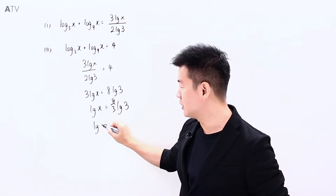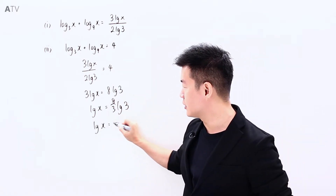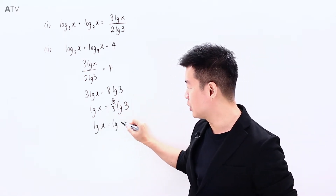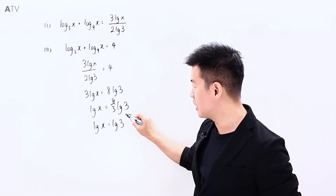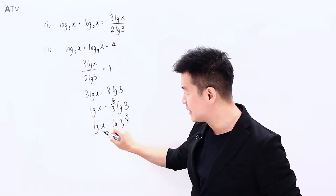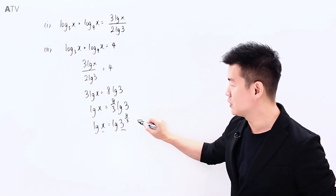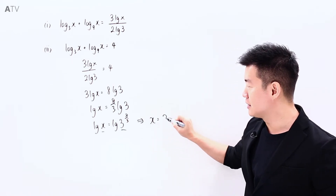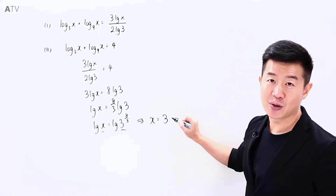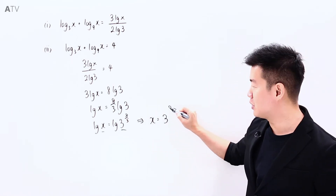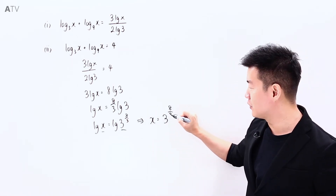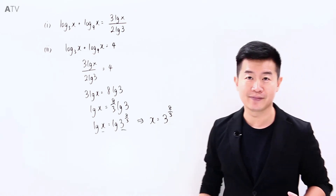we have log x is equal to log 3 to the power of 8 over 3, which means that x is simply 3 to the power of 8 over 3.